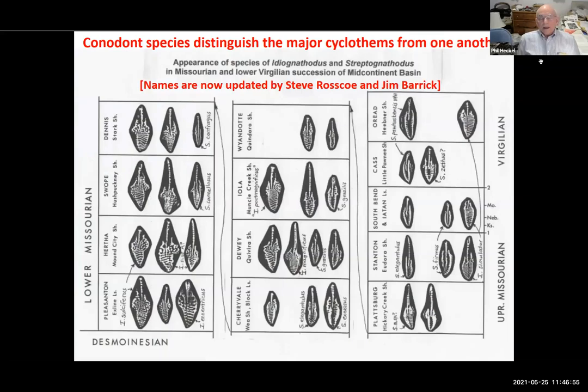These are the conodonts obtained from these offshore shales — from the early lower Missourian on the lower left up to what is now the base of the Gzhelian, the Oread cyclothem in the upper right. The names are now in the process of being updated by Steve Roscoe and Jim Barrick.